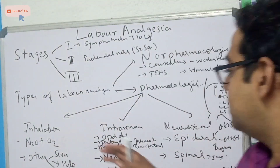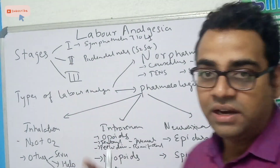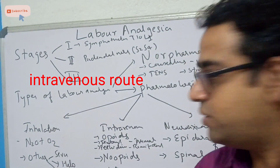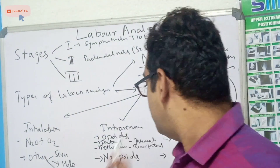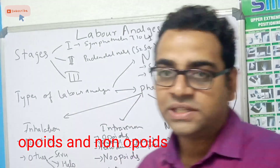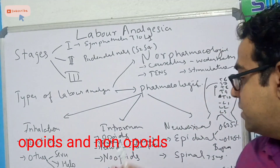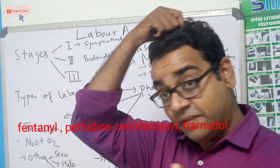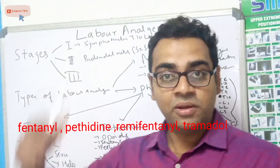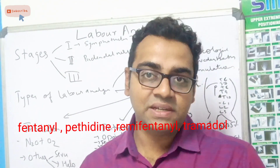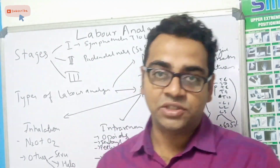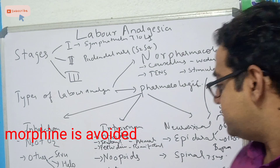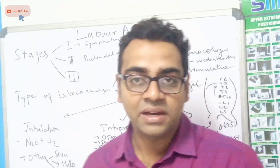There is also the intravenous route. Intravenous drugs are divided into opiates and non-opiates. Opiates may include fentanyl, pethidine, remifentanil, and tramadol. Morphine is avoided as it leads to neonatal respiratory depression. Non-opiates include ketamine and metazole.